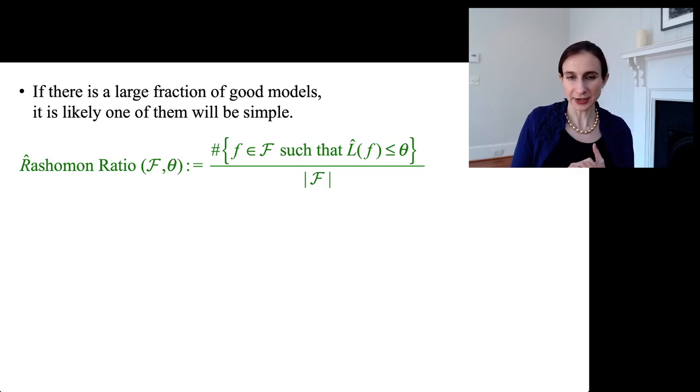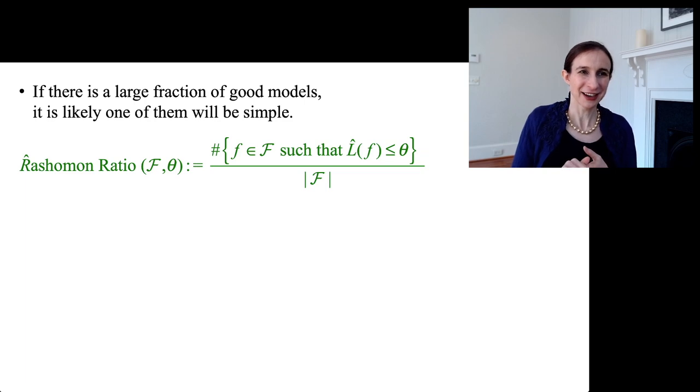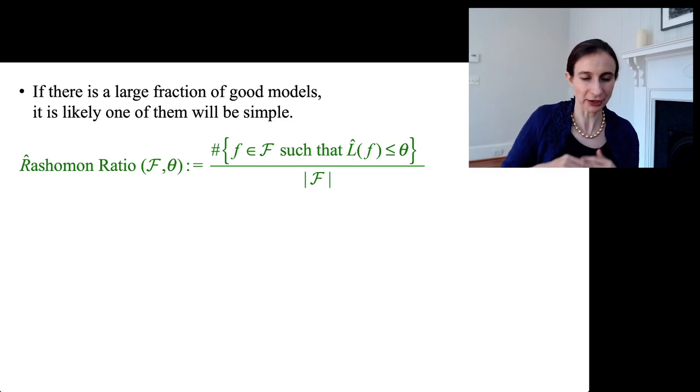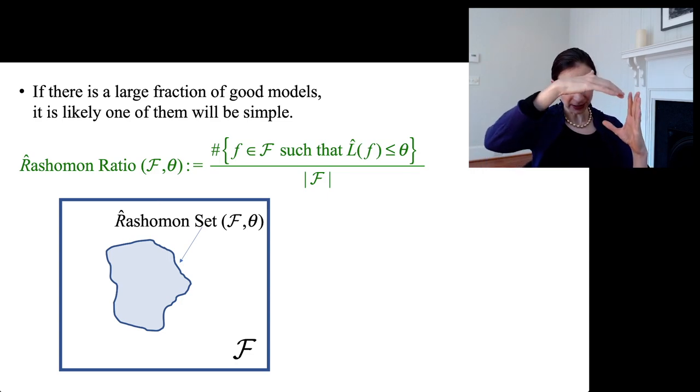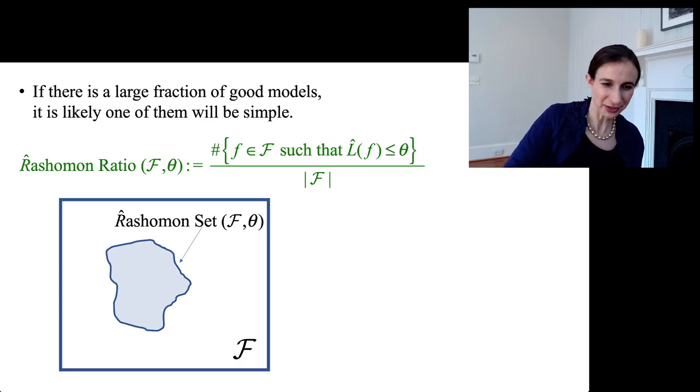From there she's defined the empirical Rashomon ratio because you can't, if you just have a dataset and you don't have the whole distribution, you can't measure the size of the Rashomon set. So she's defined an empirical version which is called the Rashomon ratio, empirical Rashomon ratio. It's the fraction of models that have low empirical loss. Okay, fraction of models that are good with respect to our training set. Now the idea again is that as long as that set is large enough, there's probably a simple model in there somewhere.